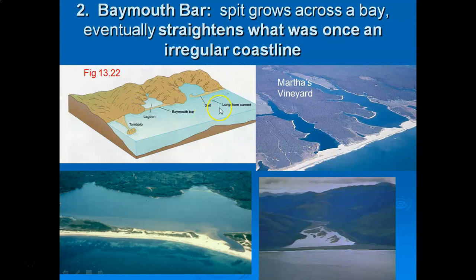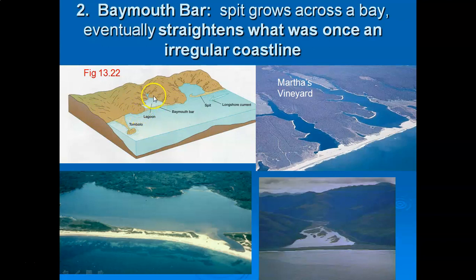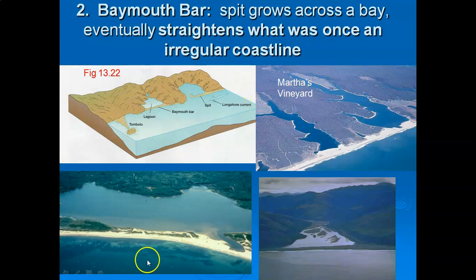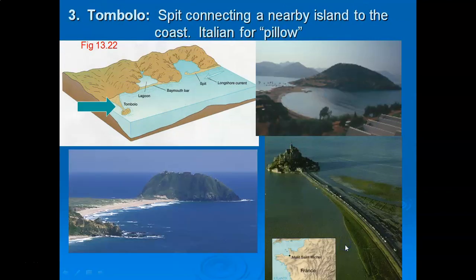Eventually a sand spit can grow across a bay to create what is known as a bay mouth bar, closing off the bay. Sedimentation then occurs in the quiet water — perhaps from a river depositing its bed load — and eventually the area becomes vegetated. What was once an irregular rocky headland coast will straighten out through time. A beautiful example on Martha's Vineyard off Massachusetts shows bay mouth bars and eventual sedimentation. Here is a bay mouth bar up in Alaska where you can see sedimentation from a melting glacier.